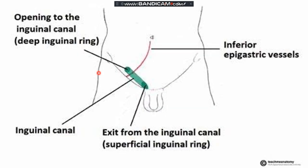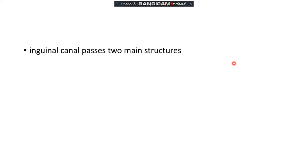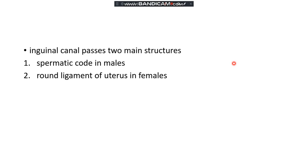This canal contains two openings: the superficial ring and the deep ring. In this picture, you can see this is the deep inguinal ring and this is the superficial inguinal ring. This is the inferior epigastric vessel, which has importance we will discuss later. The inguinal canal normally passes two main structures: the spermatic cord in males and the round ligament of the uterus in females.